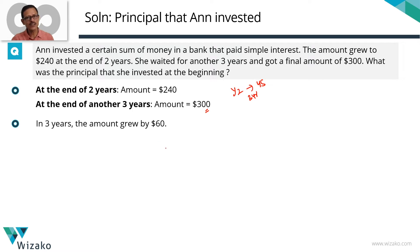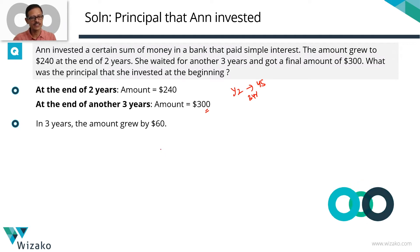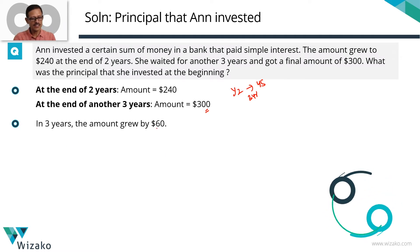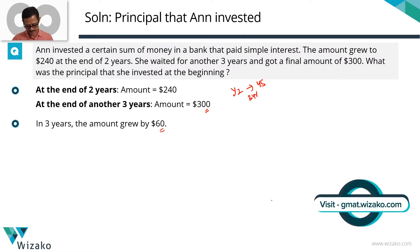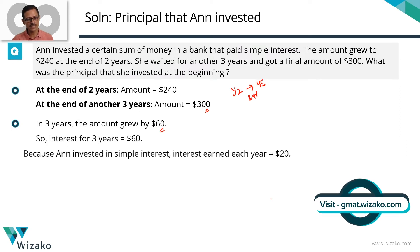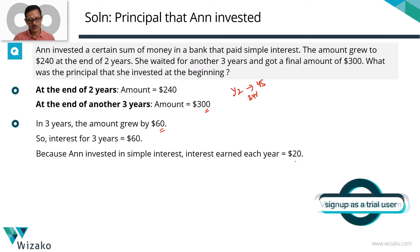This $60 was earned over a duration of 3 years. In simple interest, the interest earned is the same year after year. So over 3 years the interest earned was $60, making the interest per year equal to 60 divided by 3, which is $20.